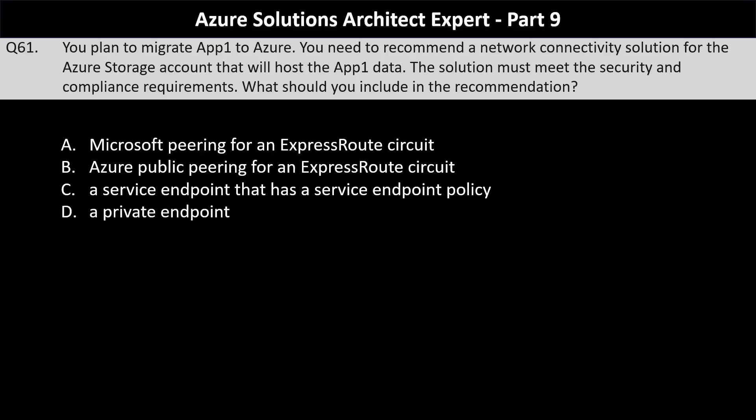The correct answer is option D: a private endpoint. A private endpoint allows you to connect to Azure services like a storage account via a private IP from within your virtual network. This ensures that traffic between your resources and the storage account stays completely within the Microsoft backbone network, avoiding exposure to the public internet. Security and compliance are enhanced because access can be restricted to only specific private networks.